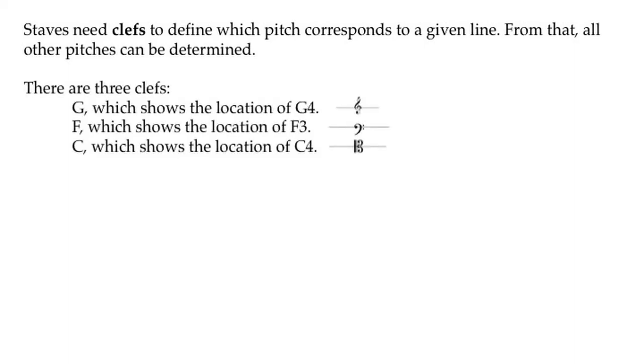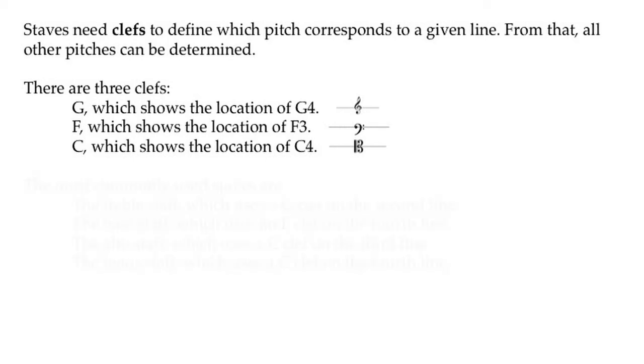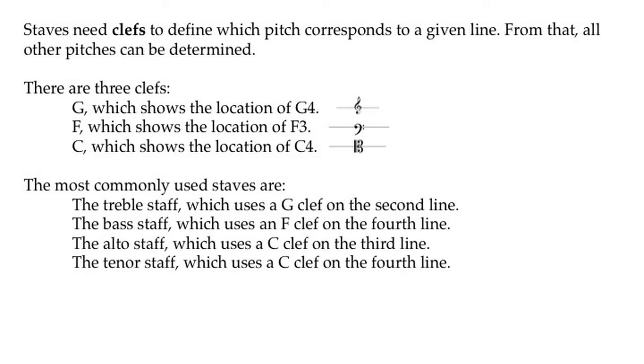There are three clefs. G, which shows the location of G4, F, which shows the location of F3, and C, which shows the location of C4. The most commonly used staves are the treble staff, which uses a G clef on the second line, the bass staff, which uses an F clef on the fourth line, the alto staff, which uses a C clef on the third line, and the tenor staff, which uses a C clef on the fourth line.